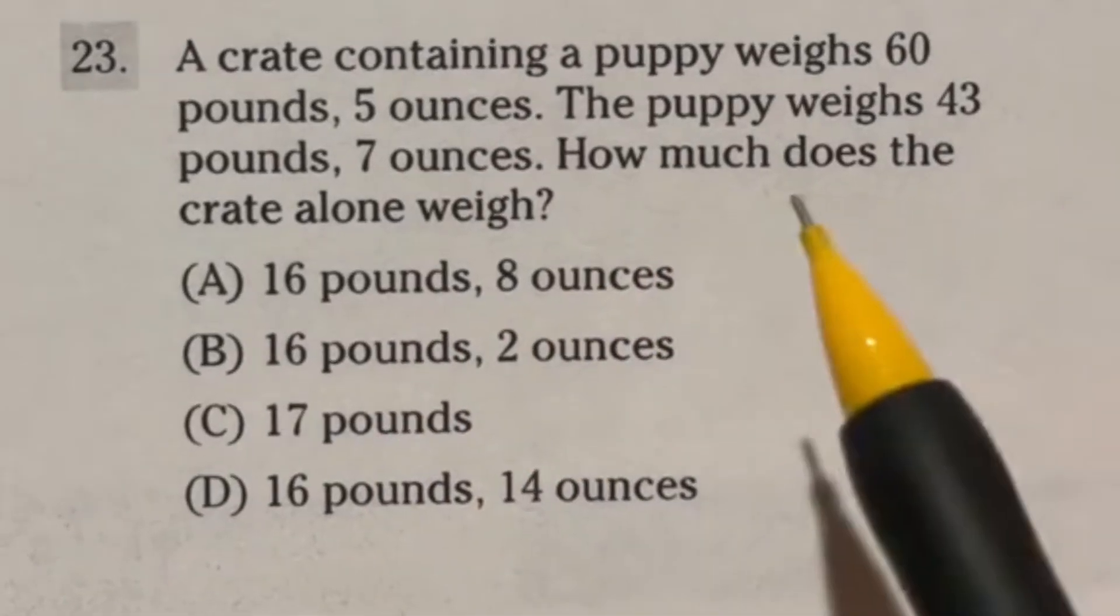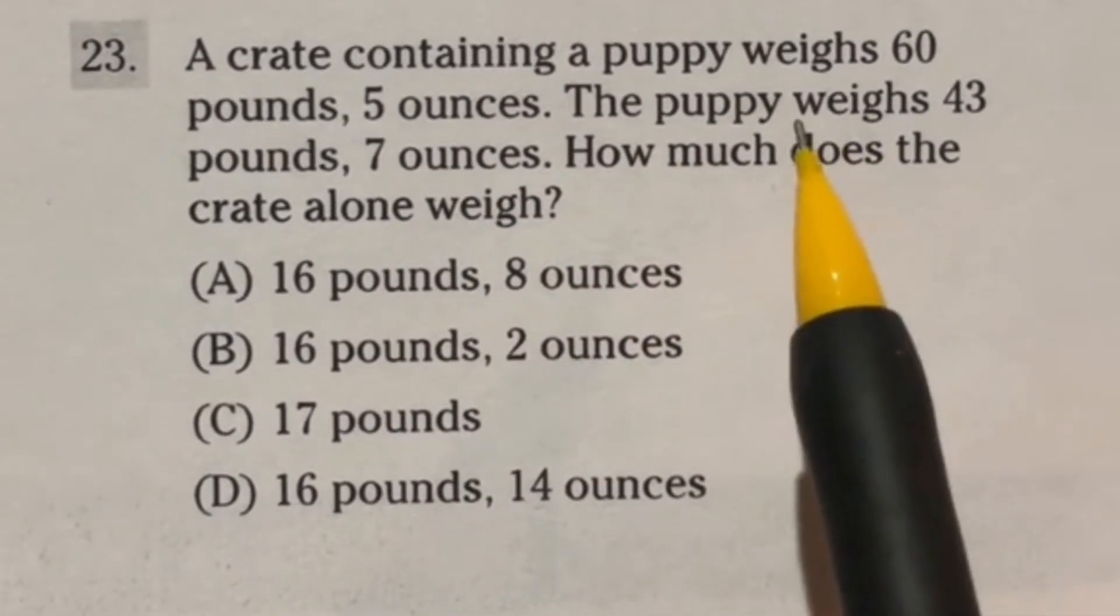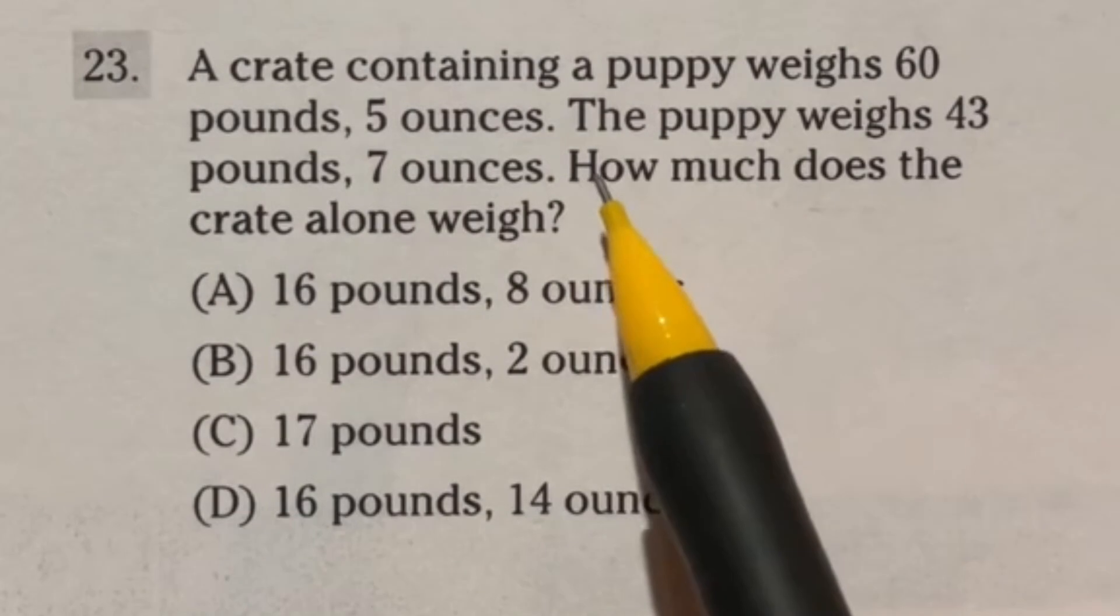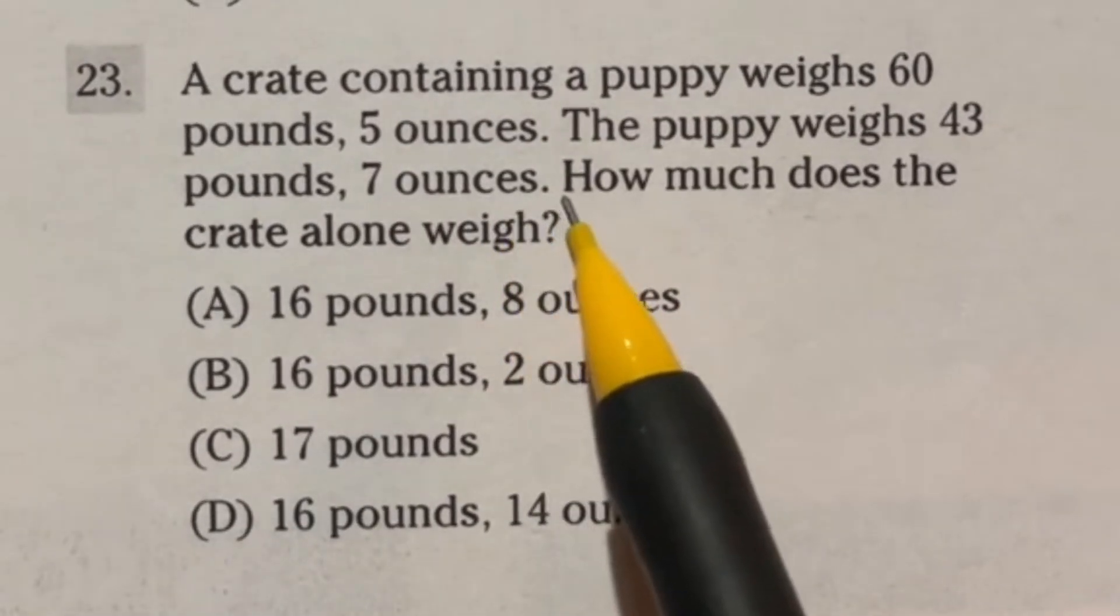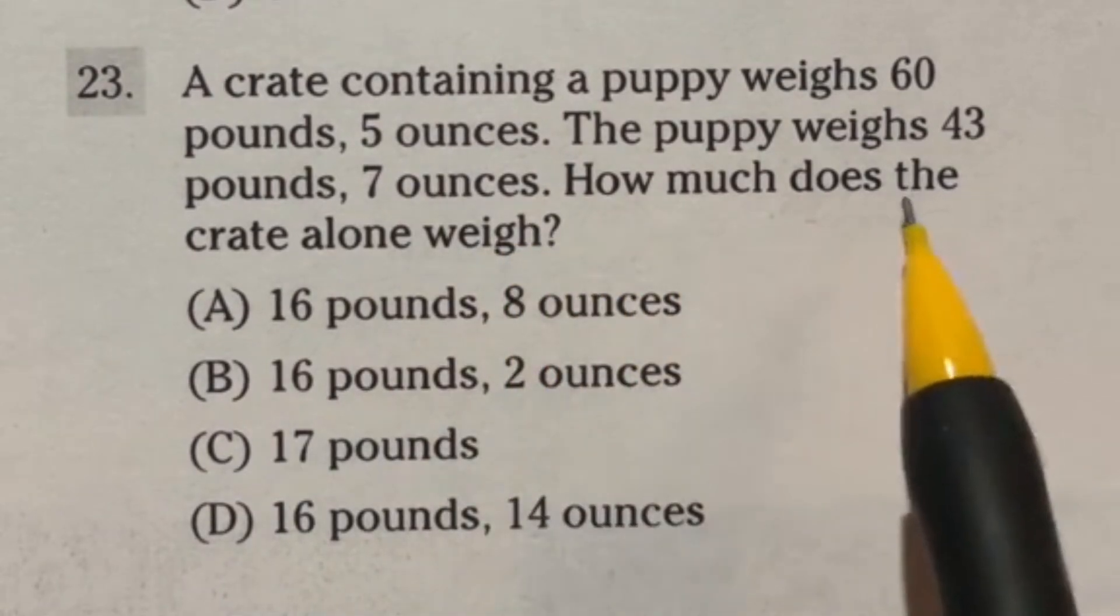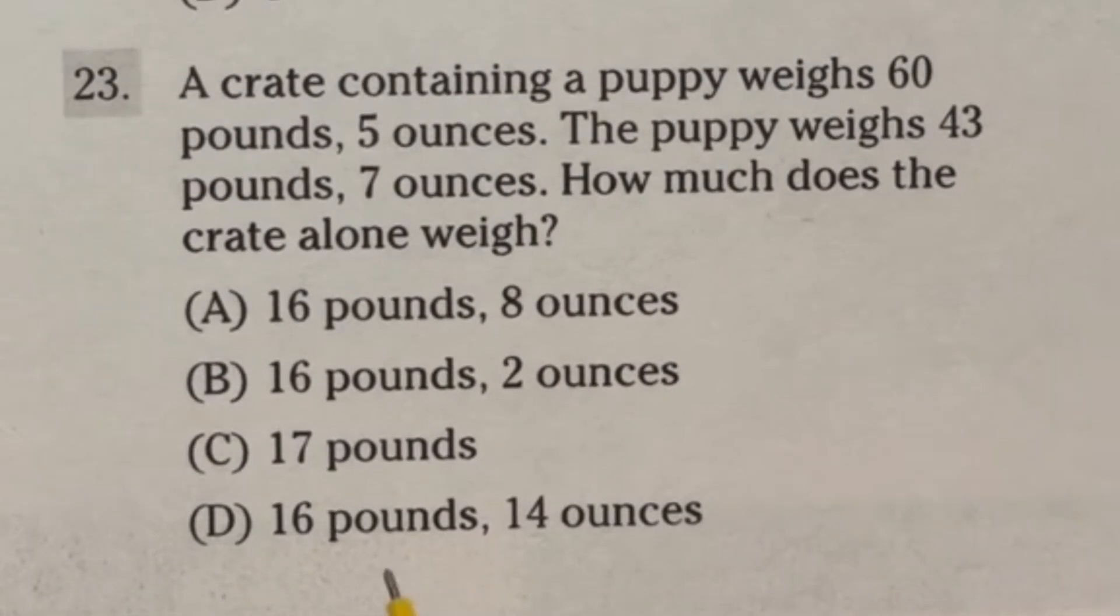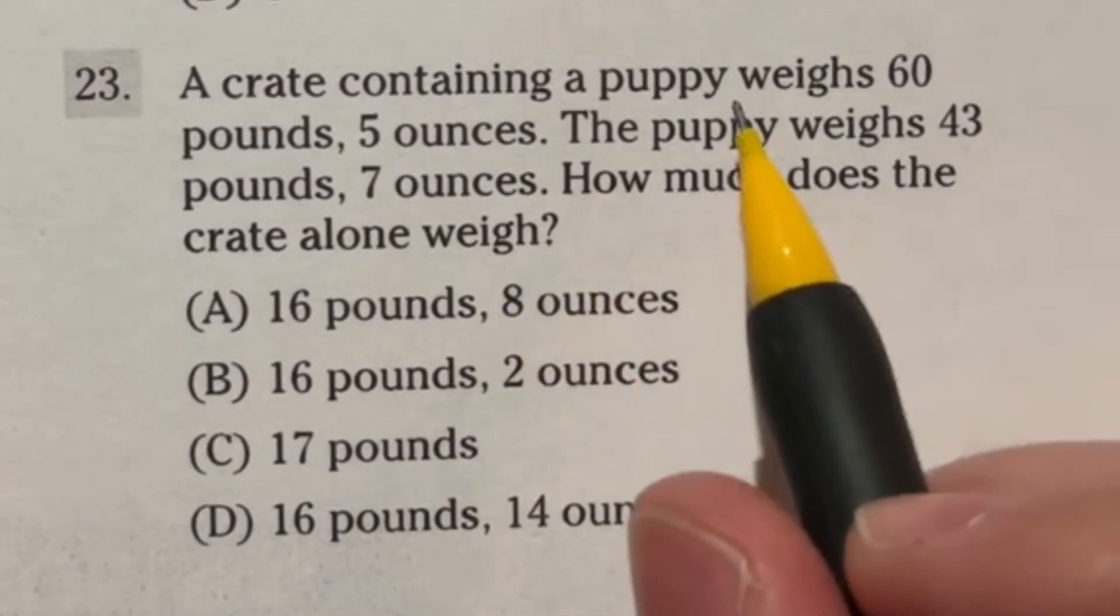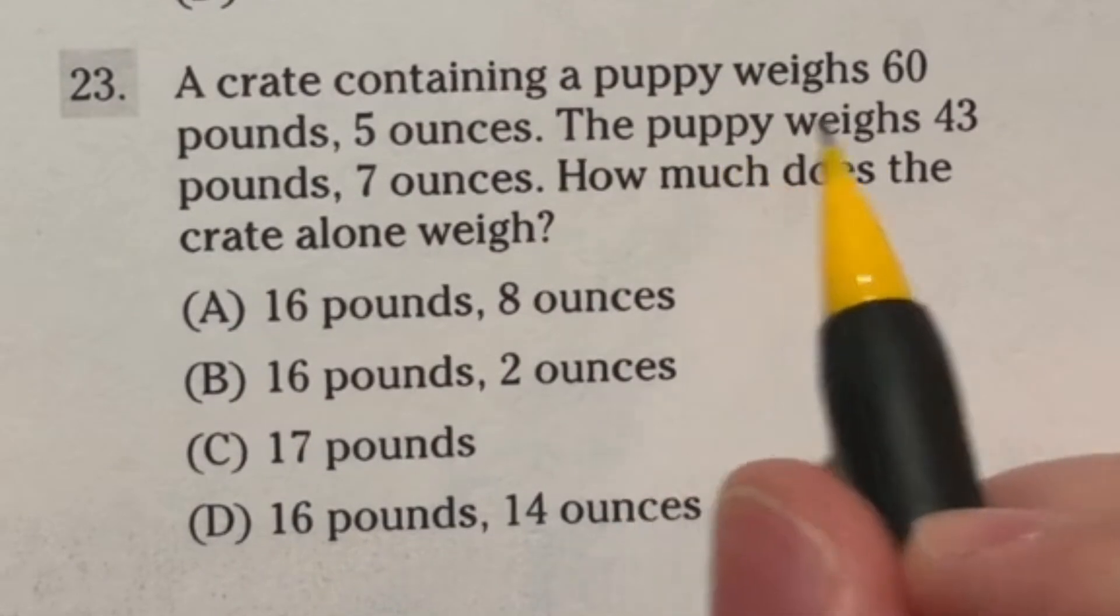The biggest issue about this one is knowing how many ounces are in a pound because I feel like a lot of people don't know that off the top of their head. But 23 says a crate containing a puppy that weighs 60 pounds, 5 ounces, and a puppy weighs 43 pounds, 7 ounces. How much does the crate alone weigh? So essentially, you got a dog inside of this crate. And you're trying to find how much the crate weighs, but you only have it with the dog in it and you have the dog alone.